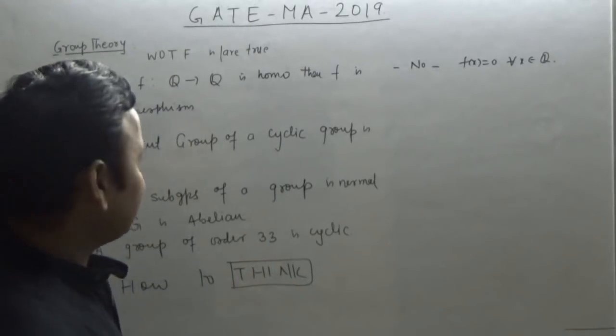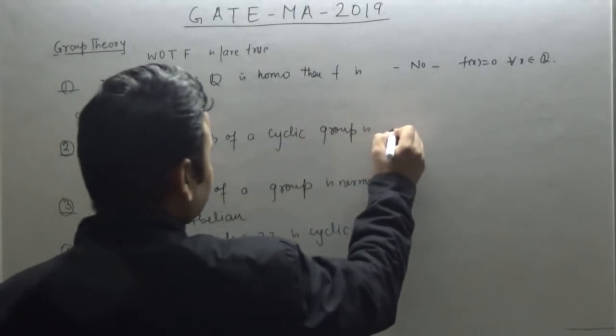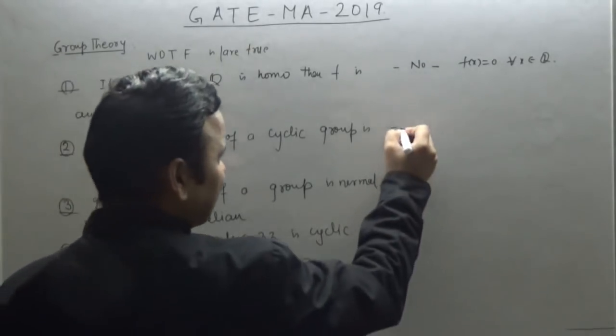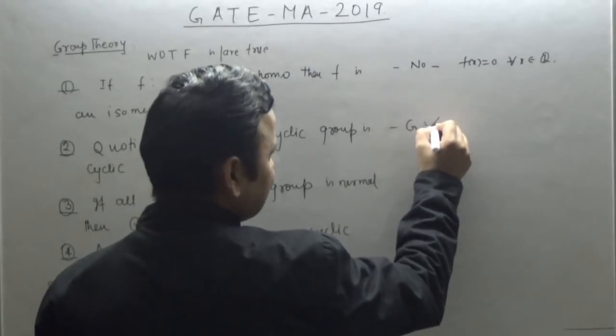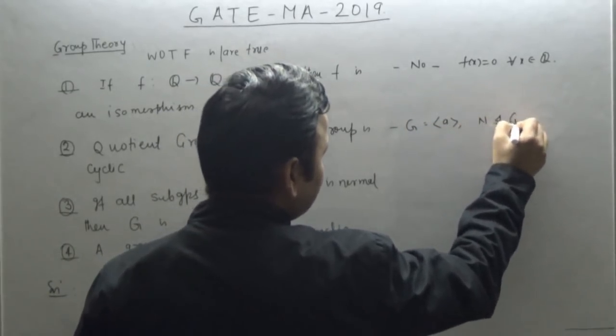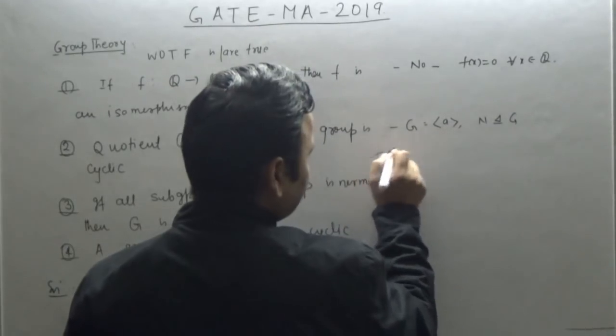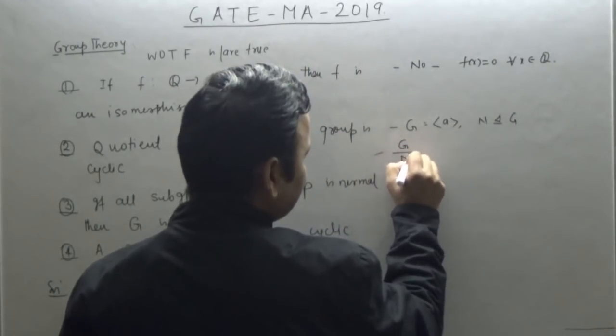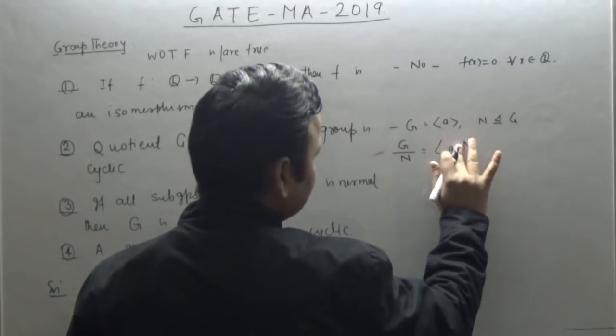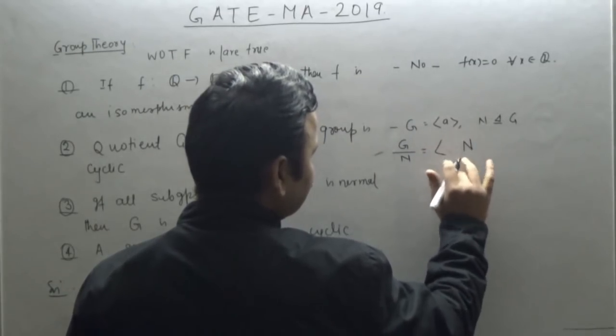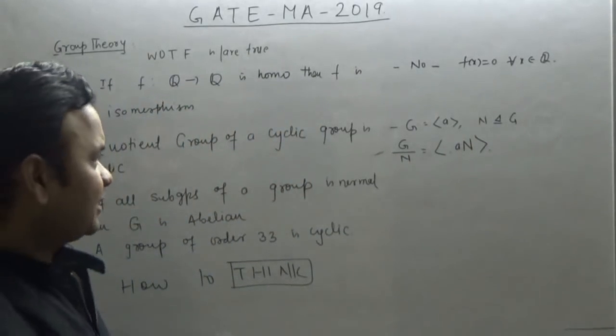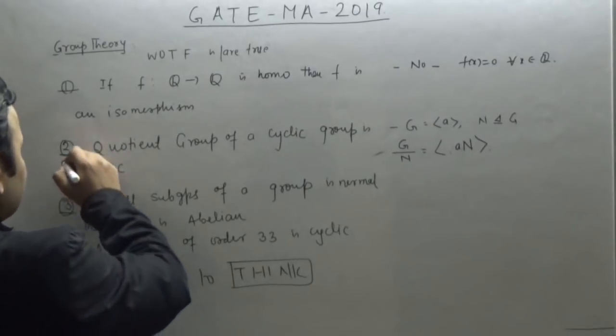Second, quotient group of a cyclic group is cyclic. If you have a cyclic group G generated by a, and you have a normal subgroup N of G, then the quotient group G by N is generated by a times N, so this is cyclic. So quotient group of a cyclic group is cyclic. This is true.